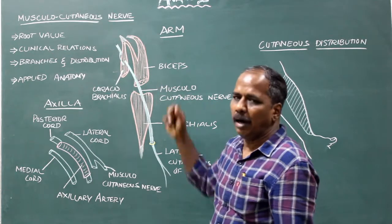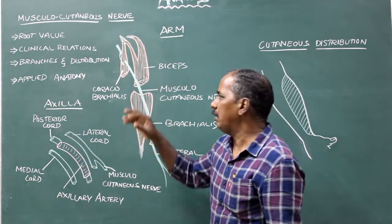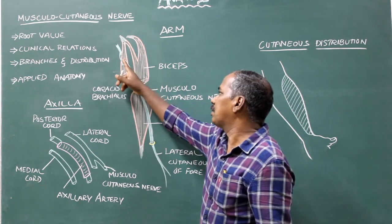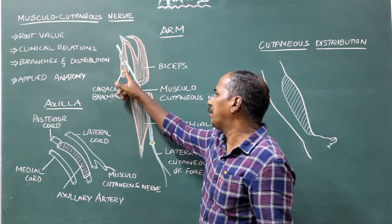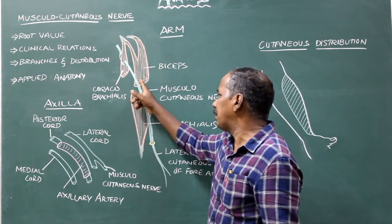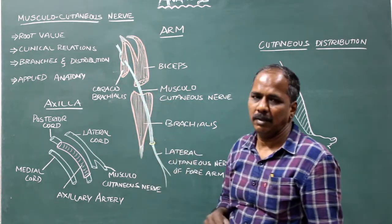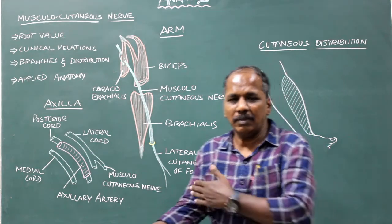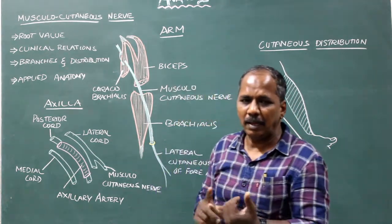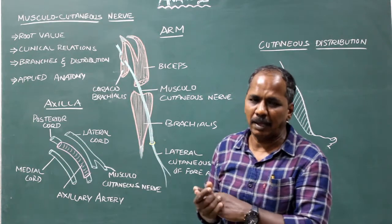In the arm, the front consists of mainly three muscles: brachialis, biceps — with its short head and long head — and coracobrachialis.